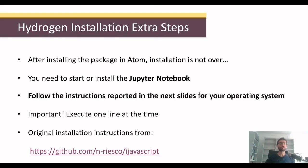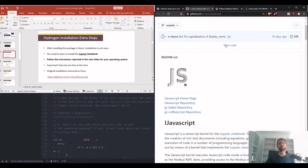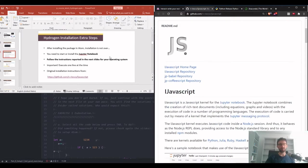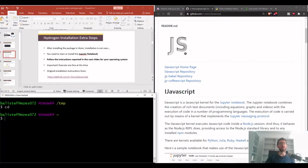The next thing to do is the real work — the installation through the package manager in ATOM is the easiest part. Then you need to install a few more things to make the whole workflow work smoothly. The latest instructions are from a specific website, but I've reported them on the slides so you can just follow along. I'm going to open a Git Bash tab and go through the slides.